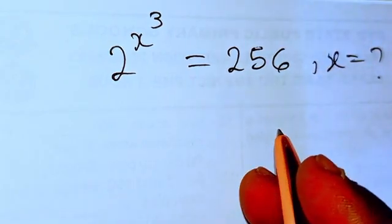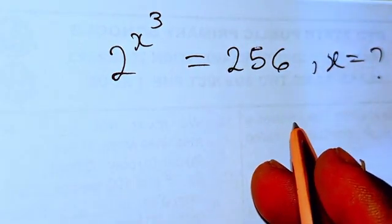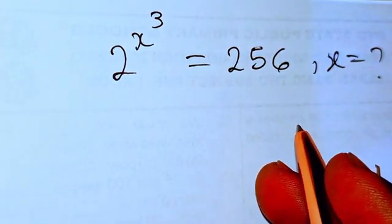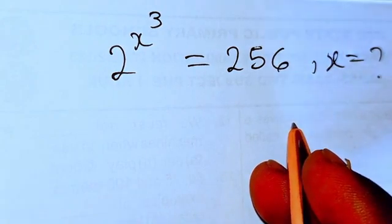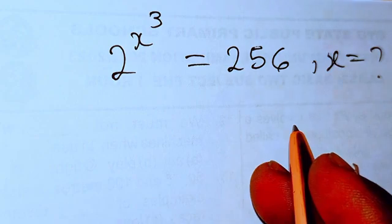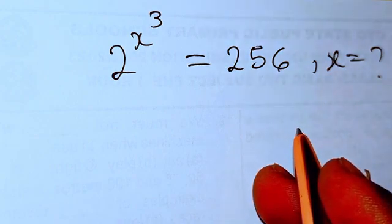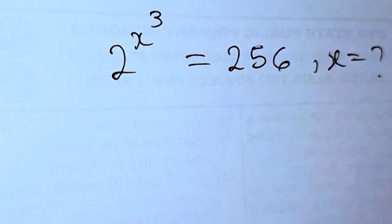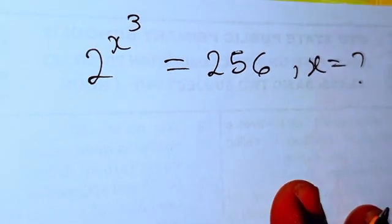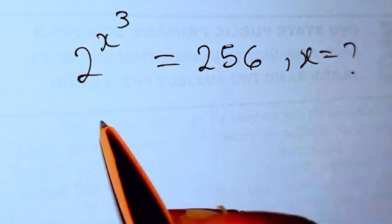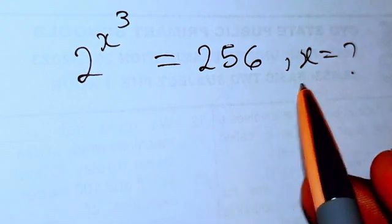Hello, in this tutorial we are going to be solving this exponential equation. The question says 2 to the power of x to the power of 3 equals 256. So what is the value of x? We are going to be looking for all the possible values of x.